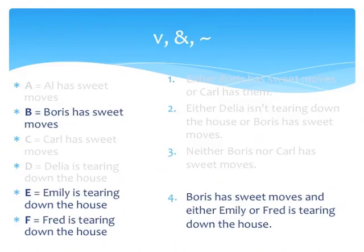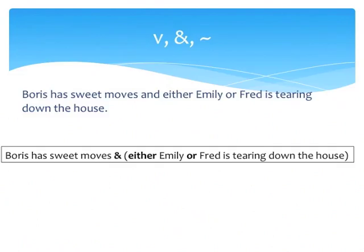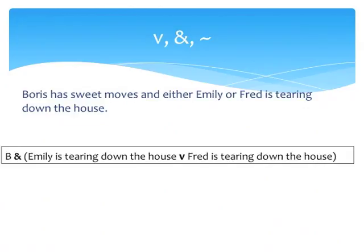Finally, let's deal with sentence 4, which is more complex since it's made of 3 atomic sentences. The first step is to determine the main connective, which in this case seems to be AND, so that sentence 4 has two main immediate components. The first is 'Boris has sweet moves,' and the second is 'Either Emily or Fred is tearing down the house.' Our left conjunct is an atomic sentence, namely B. However, our right conjunct is a complex sentence whose main connective is EITHER...OR, so we simply substitute with the V. We are finally left with two disjuncts, each of which is an atomic sentence. I leave the final sentence as an exercise for you.